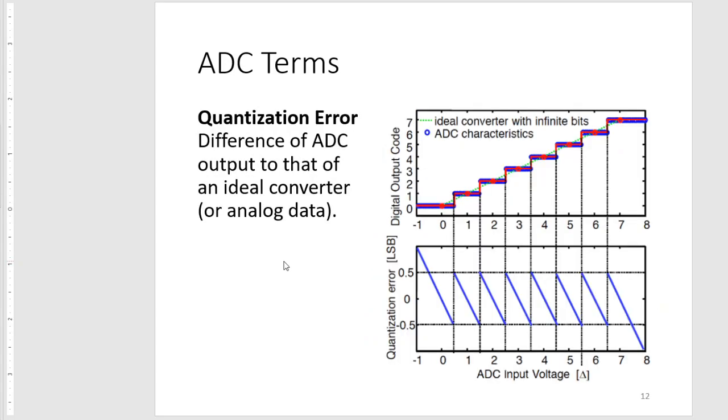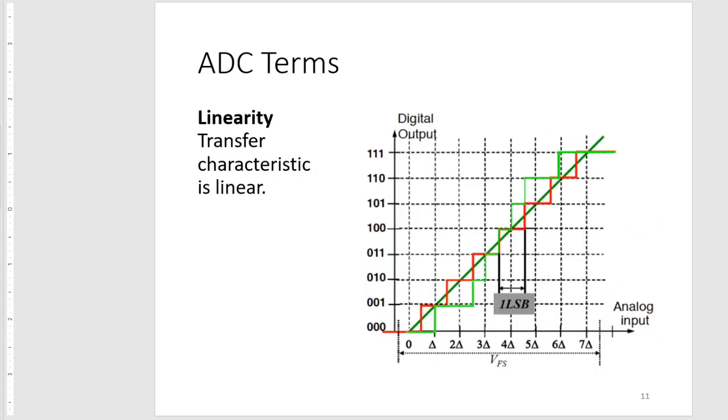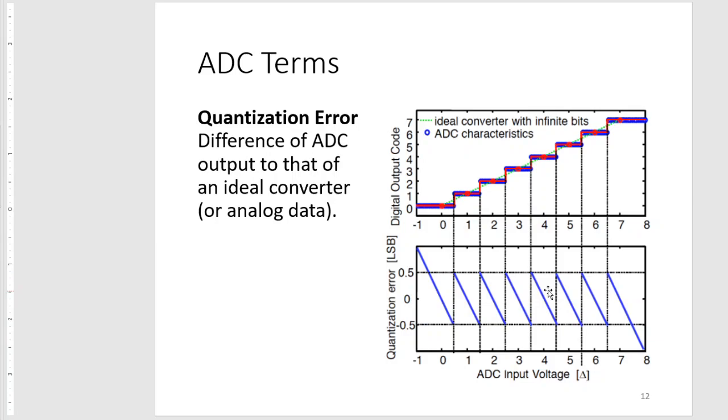Quantization error is the difference between the ADC output and that of an ideal converter or your actual analog data. If our digital output one corresponds to one volt, when our input is at the middle there is no quantization error, but between the steps we get maximum quantization errors. If we have a nonlinear ADC, the quantization errors for the middle voltages will be lower than those at the edges. You may want that if you know the information you will be getting is more focused on voltages in this range rather than at the edges.